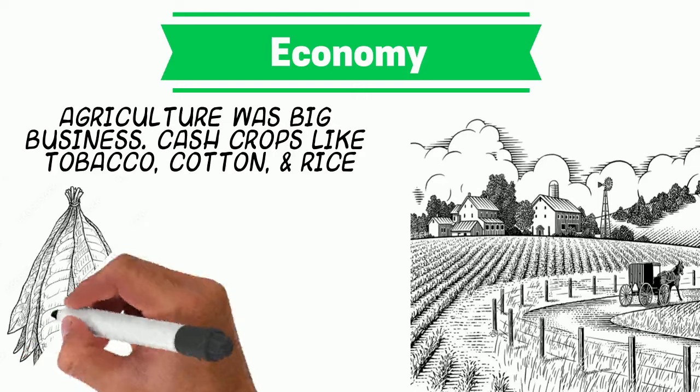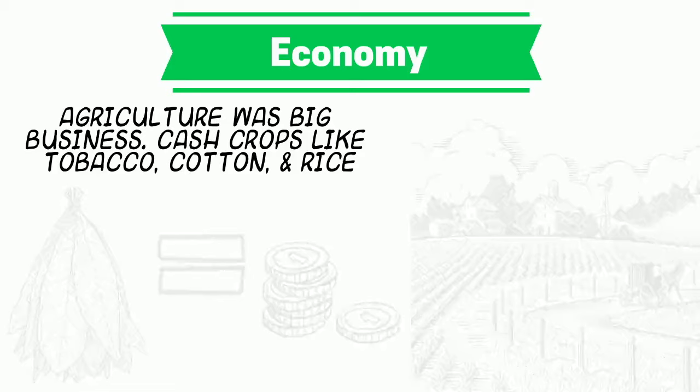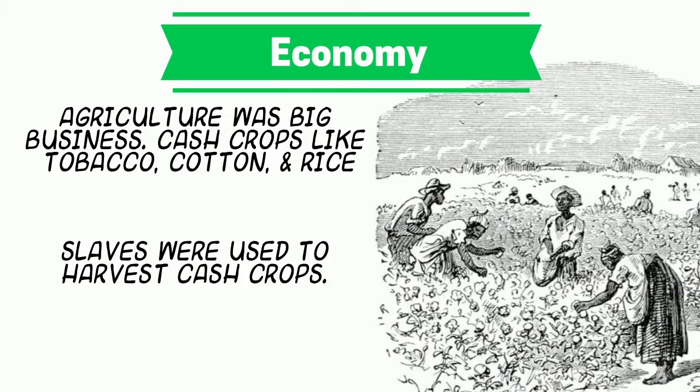As you might have guessed, the economy was based around this profitable agriculture. Tobacco, cotton, and rice made the colonies very wealthy. However, the Southern Colonies also relied on slaves to harvest these cash crops. Slaves were purchased as property, and in the Southern Colonies they actually outnumbered the free people.